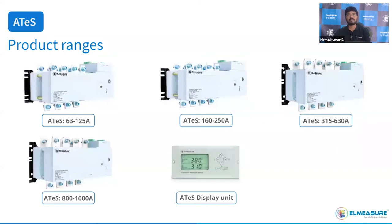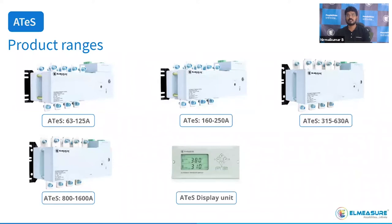Our entire motorized ATS product range: the first frame is 125A, with three models — 63A, 100A, and 125A. The second frame is 160A, 200A, and 250A. The third frame is 315A, 400A, and 630A. The last frame is 800A, 1000A, 1250A, and 1600A.